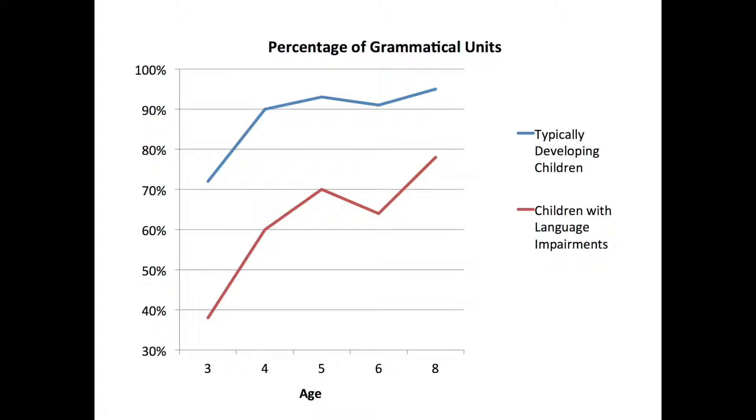Now that we know about percentage of grammatical units for both typically developing children and children with language impairments, how can we use this tool clinically to help diagnose those children? This is relatively easy to do. You collect a language sample from a child — ask them to retell a story. You record and transcribe it. We are fans of systematic analysis of language transcripts, but for this measure you can also use a simple word processor, transcribing each utterance and deciding whether it is grammatical or ungrammatical.